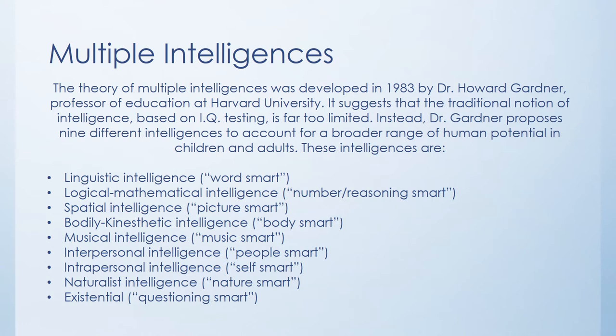Naturalist intelligence describes people who are able to look at our natural environment and understand what's going on — these folks might also be scientists with a lot of logical-mathematical intelligence. The last and newest addition to Dr. Gardner's multiple intelligences is the existential — the questioning smart. These are folks who dive deep into the unanswered questions of society, the world, and history, trying to come out with a sense of an answer. These are our philosophers and often our lawyers.